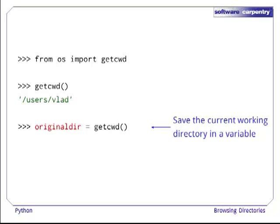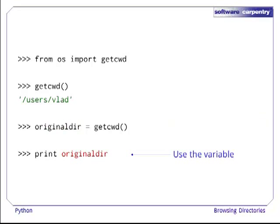Getcwd is a function and it returns the current directory, so we can assign that to a variable. Then, we can use that variable. For example, print it.